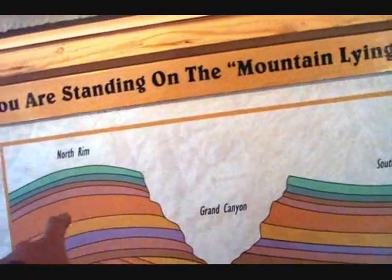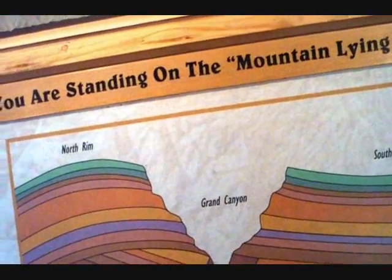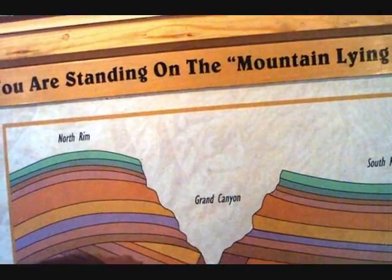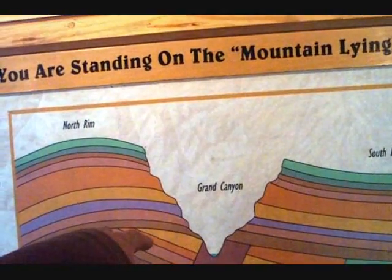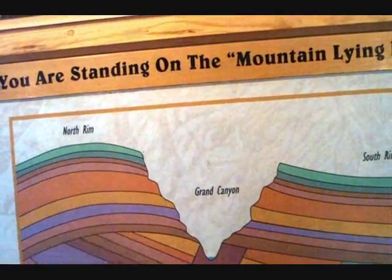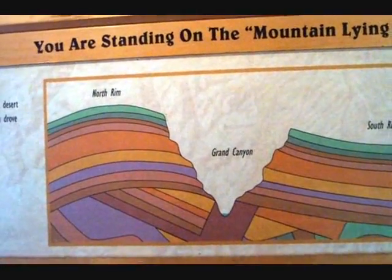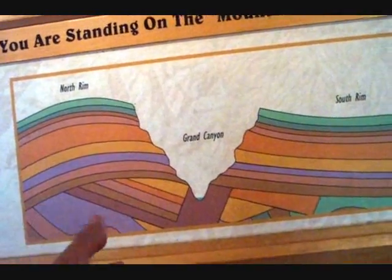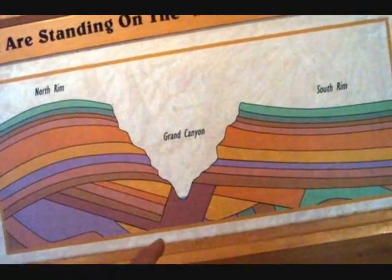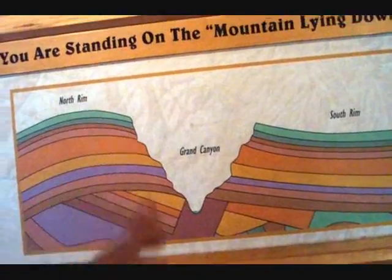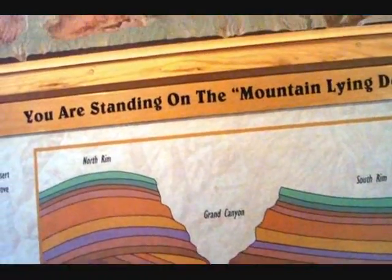There is continuity between the sedimentary layers on either side, but because of the uplift that actually happened about 70 million years ago — that's the uplift that caused the Rockies — once you form the Rockies, you then form the Colorado River, and that carved the canyon over the last six million years.